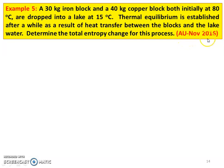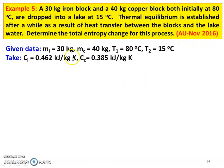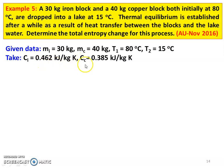This is question 1 from the November 2016 question paper. Writing down the given data: mass of the iron block is 30 kg, mass of the copper block is 40 kg, initial temperature T1 is 80 degree Celsius, and final temperature T2 — the lake water temperature — is 15 degree Celsius. Specific heat of iron block: 0.462 kJ per kg Kelvin; specific heat of copper block: 0.385 kJ per kg Kelvin.